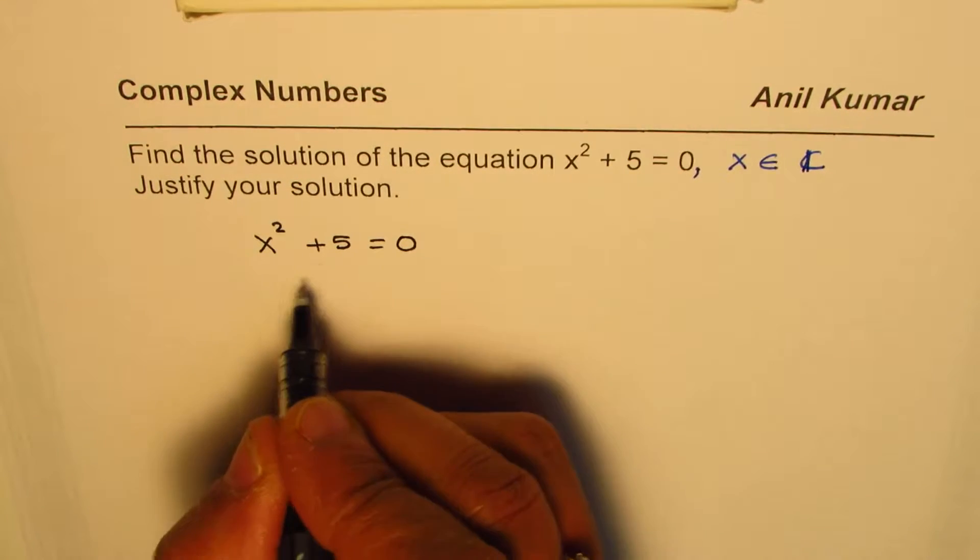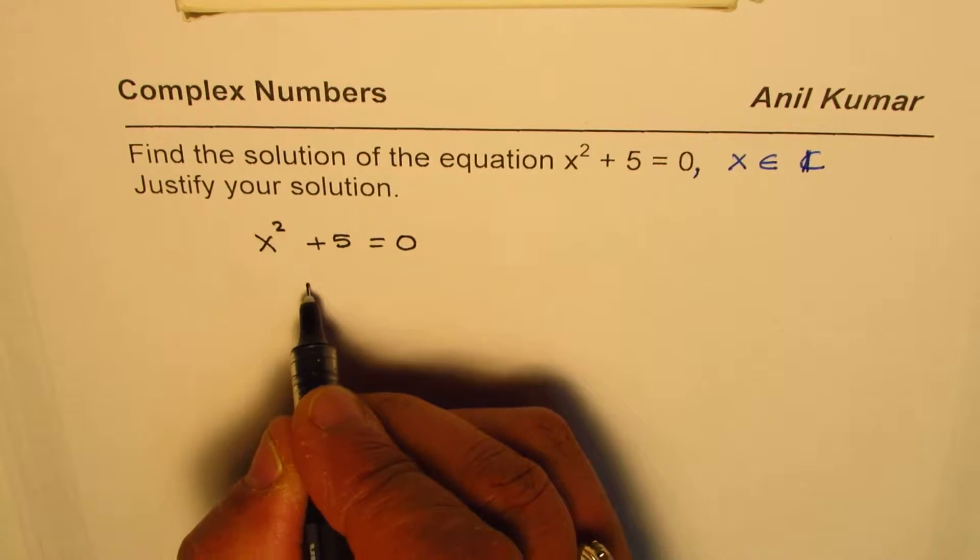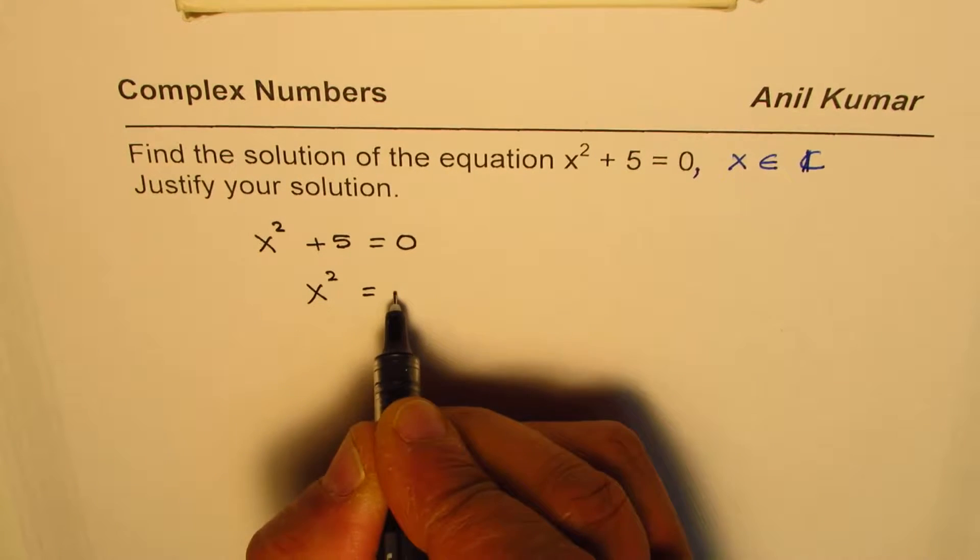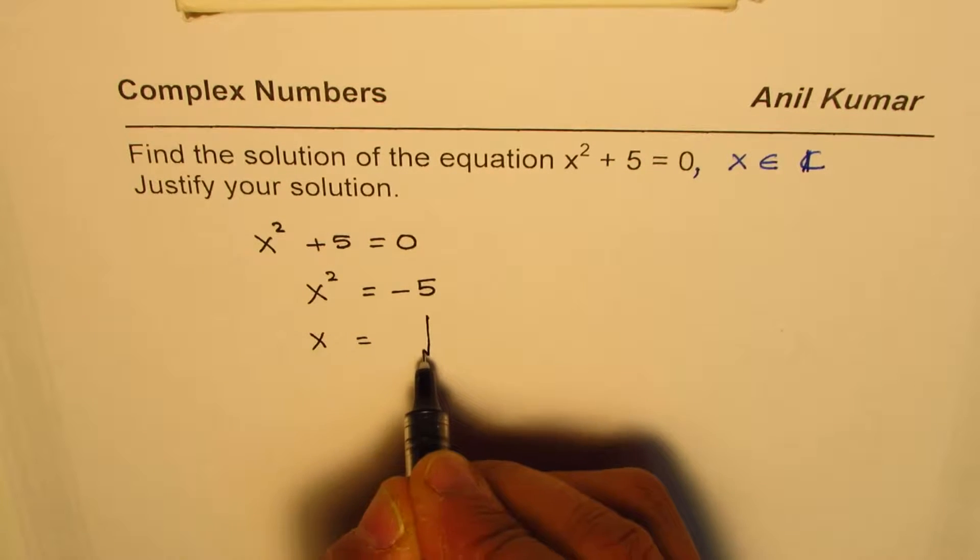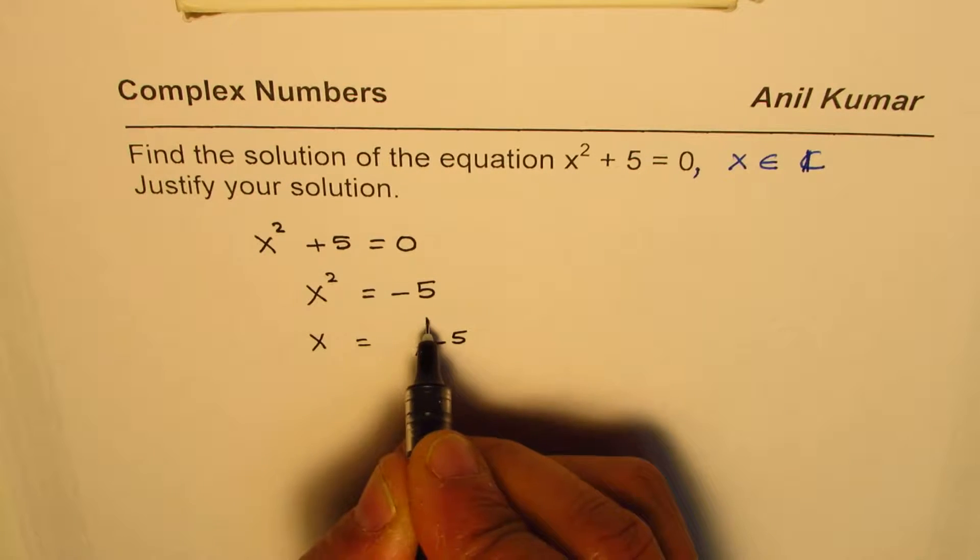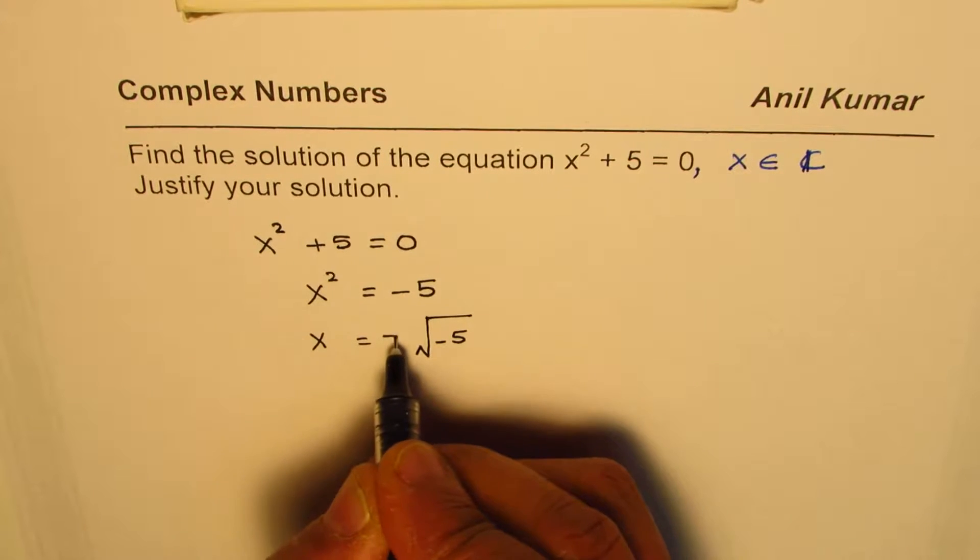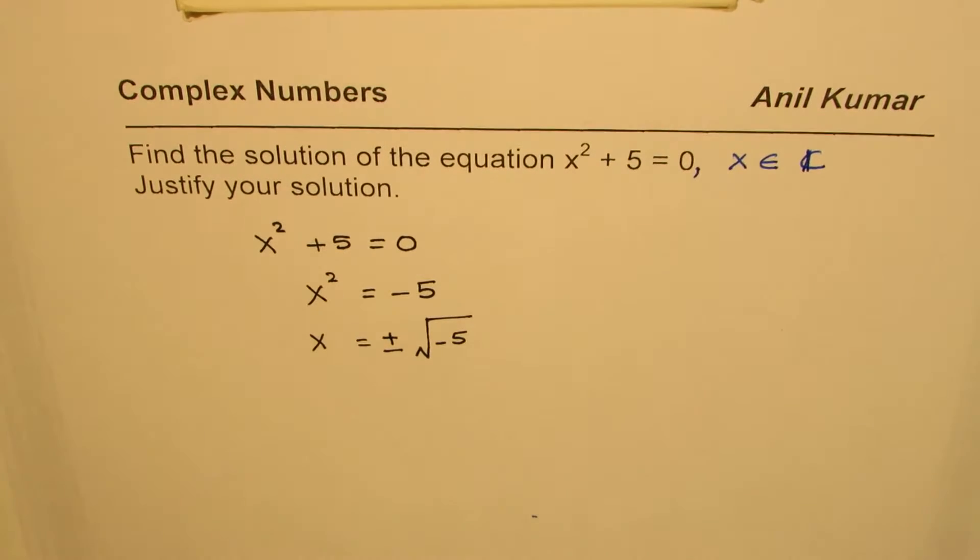To find the solution, we can isolate x² first, so we get x² = -5. So x should be equal to the square root of this number, which is -5. Whenever you do square root, you have to do plus and minus; you expect two roots, right?